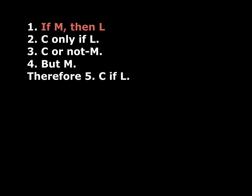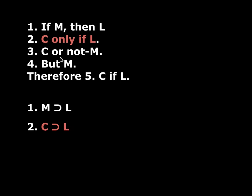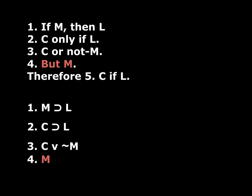Now let's translate each one individually. 'If M then L' — that's a conditional. The antecedent is M because M follows 'if,' so it's M horseshoe L. Statement one: M horseshoe L. Next, 'C only if L' — that's a conditional; whatever follows 'only if' is the consequent, so L goes on the right, C on the left: C horseshoe L. Next, 'C or not M' — that's easy: C wedge tilde M. 'But M' — remember, if a conjunction like 'but' or 'and' is the first word in a sentence and there's no other conjunct, just ignore it. So this will just be M.